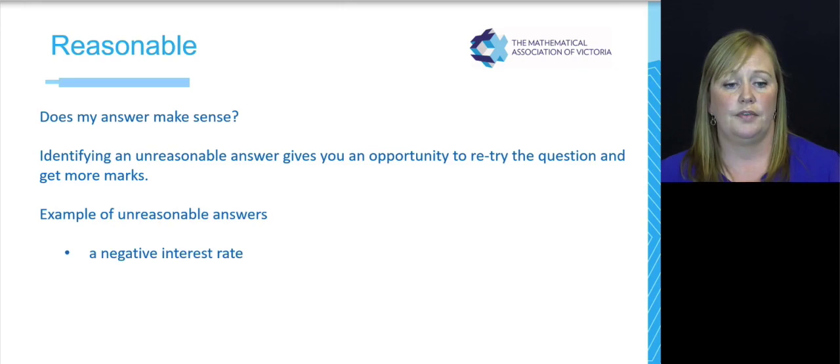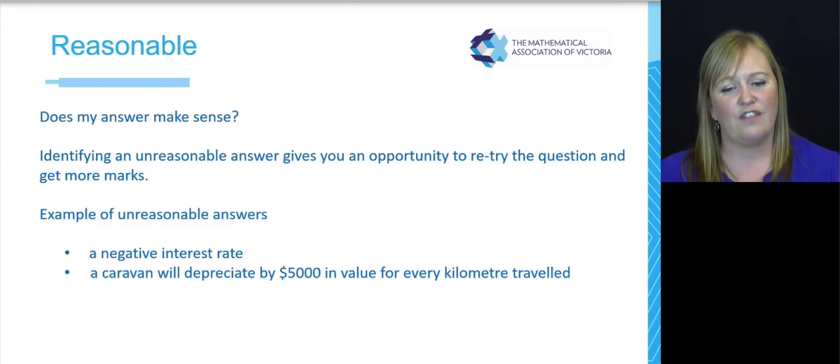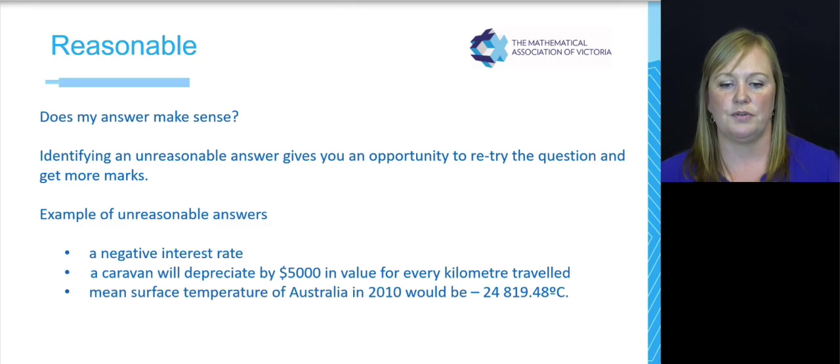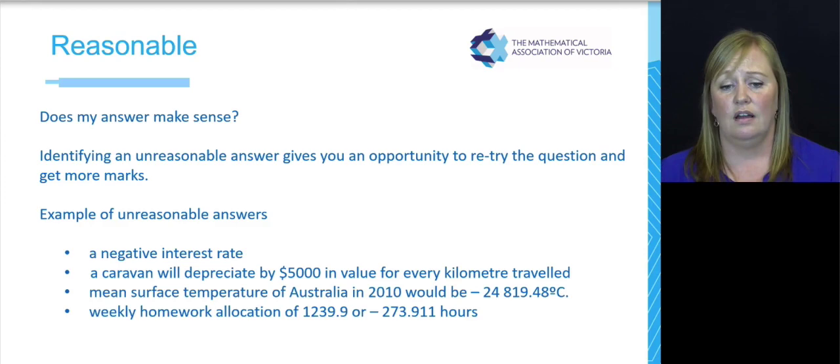Examples of unreasonable answers over the years. People have given a negative interest rate. You can't have a negative interest rate. Go back and check. A caravan will depreciate by $5,000 for every kilometer it travels. It's going to drive around the corner, it's going to be worth less than what you paid for it. Could you have a mean surface temperature of negative 24,000 degrees? Could you have a weekly homework allocation of a negative number or 1,200 hours a week of homework? A little bit extreme.